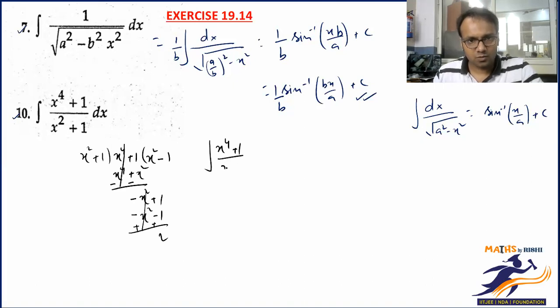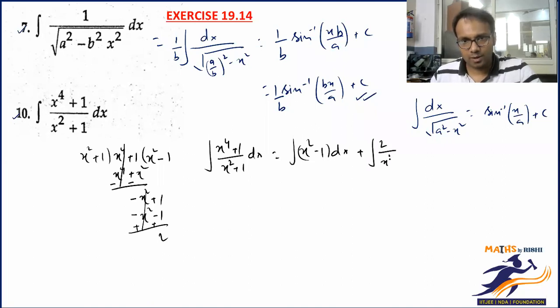Which equals the integral of (x² - 1) dx plus the remainder which is 2 over the divisor which is x² + 1.